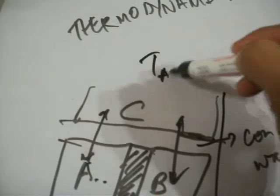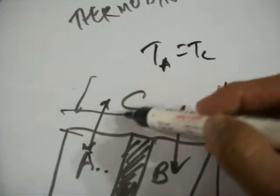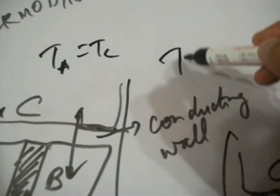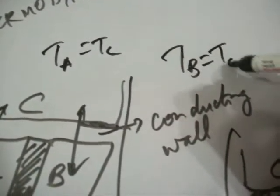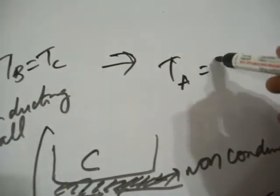The implication is that temperature of A equals to temperature of B. That is what the implication is of this part. And on this part, what we hear from this theorem here is that TA equals to TC from this and TB equals to TC from this, which implies that from here TA equals to TB.